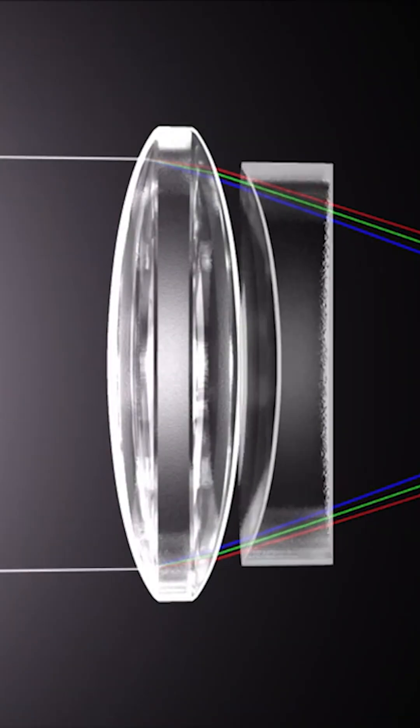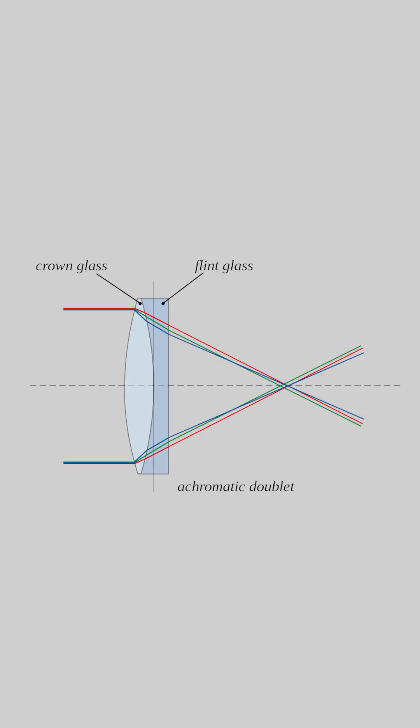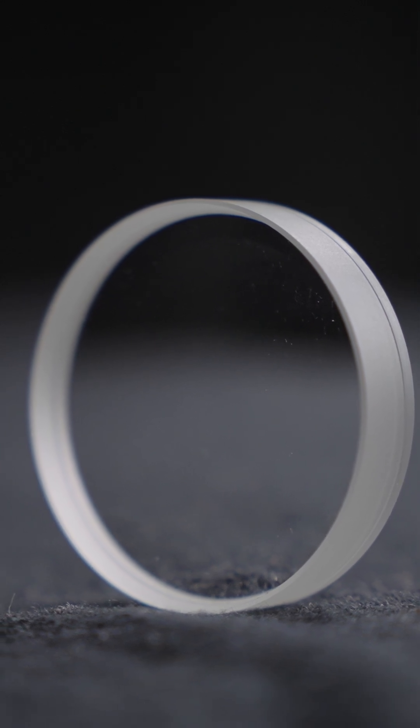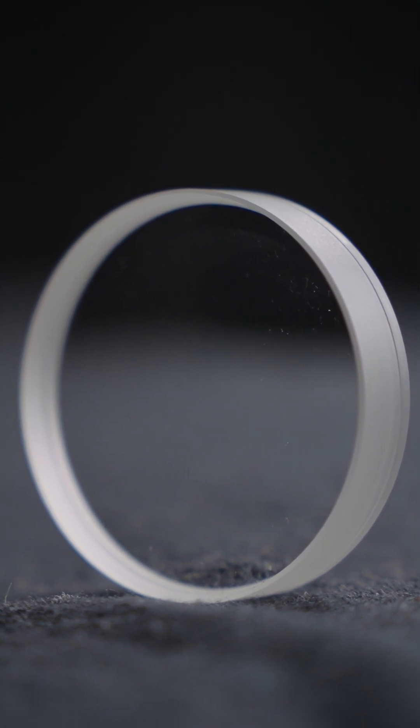We can correct for this by adding more lenses. You can pair what's called crown and flint glass together to form an achromatic doublet, with the convex flint glass and concave crown glass having different refractive indexes. They work together to correct for aberration.